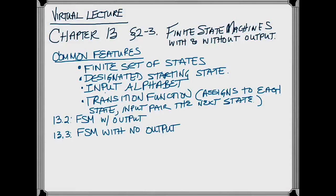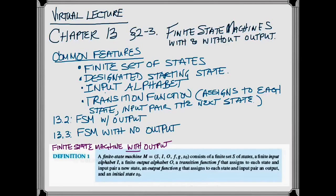So the official definition from the book, and I know how much you love those. A finite state machine with output, M, is designated as a six-tuple of S, which is the set of finite states, I, which is the finite input alphabet, O, which is the finite output alphabet,